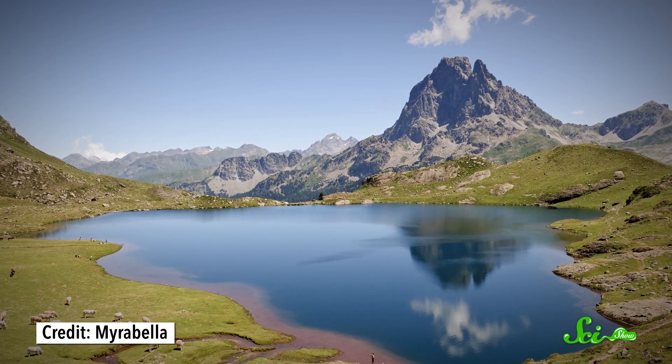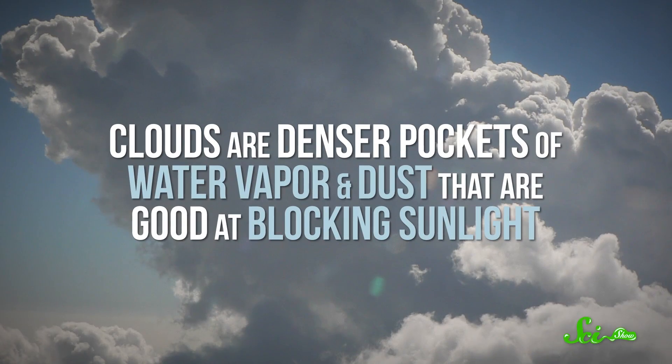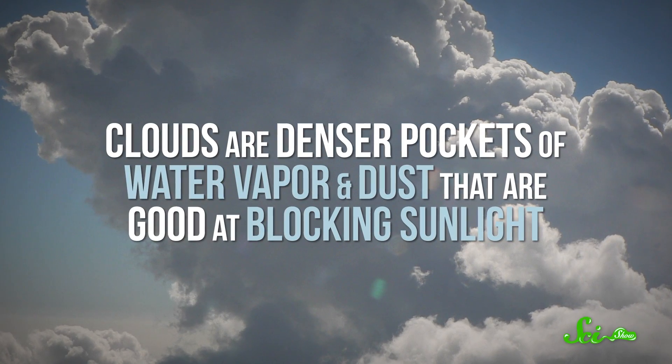These two things—particles in the air and something to block parts of the sunlight—are why clouds are so common in those Facebook pictures. Clouds are denser pockets of water vapor and dust that are really good at blocking sunlight. And the area around clouds also tends to have some dust and water. So if some light does manage to break through a hole in the clouds, it hits a whole bunch of material that scatters it. But you don't need clouds.